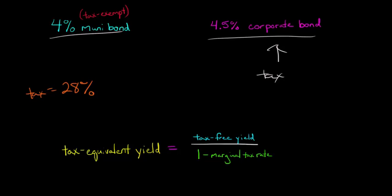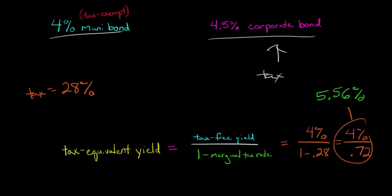To calculate the tax-equivalent yield of this municipal bond, we take 4% and divide it by 1 minus 0.28. That 0.28 is the tax bracket you're in. If you're in the 10% tax bracket, this would be 0.1. Your tax-equivalent yield depends on your personal tax rate. So this is 4% divided by 0.72, which equals 5.56%.